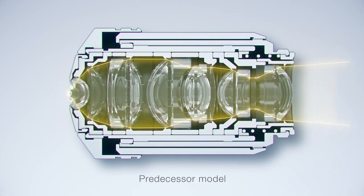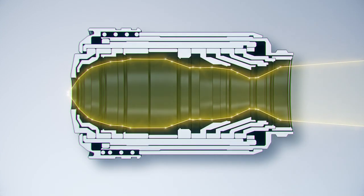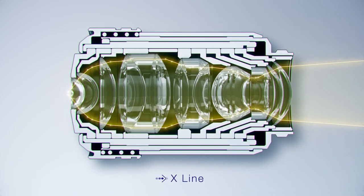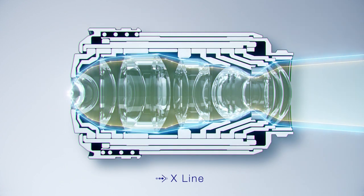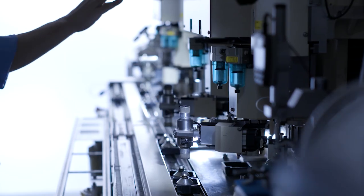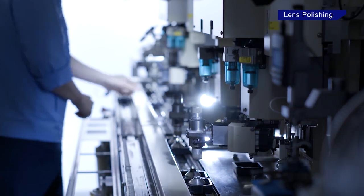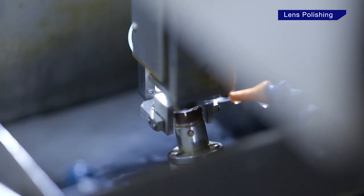The lenses in X-Line objectives are so thin that we can bundle more of them into a standard housing, leading to a dramatic increase in optical performance. To craft these ultra-thin lenses, we invented a new polishing technology.